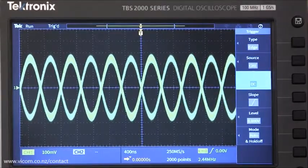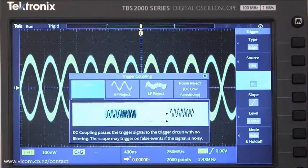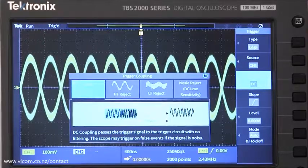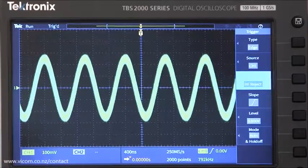I can choose HF reject option out of the coupling menu, and the scope will filter out high frequency noise from the trigger source. This gives me a stable, perfectly triggered waveform.